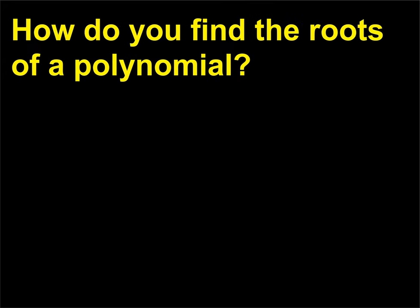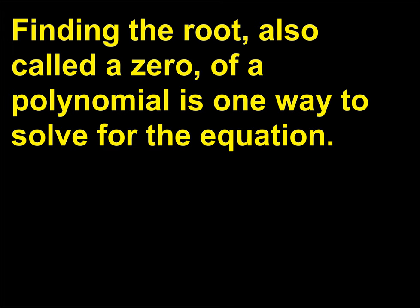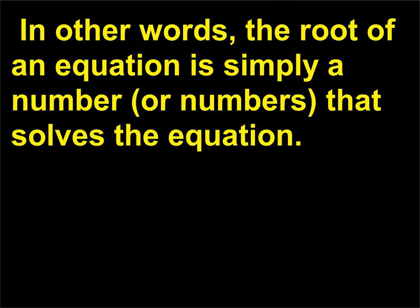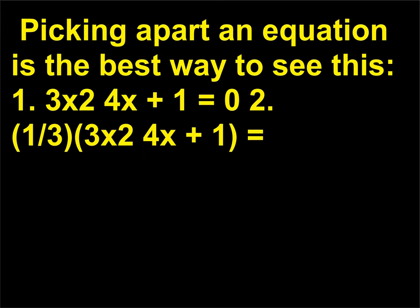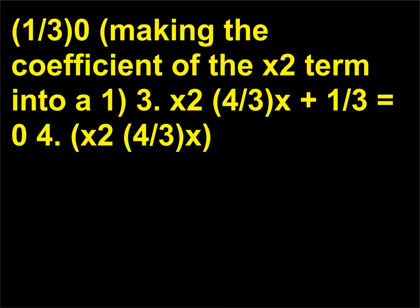How do you find the roots of a polynomial? Finding the root, also called a zero, of a polynomial is one way to solve for the equation. In other words, the root of an equation is simply a number or numbers that solves the equation. For example, for second-degree polynomials we can find the roots by completing the square. Starting with 3x² − 4x + 1 = 0, divide through by 3 to make the coefficient of x² equal to 1: x² − (4/3)x + (1/3) = 0. Then group the x and x² terms together and determine the coefficient of the x term.